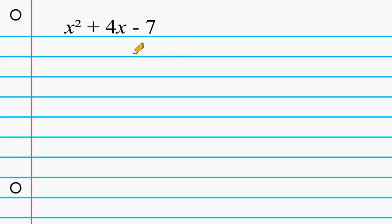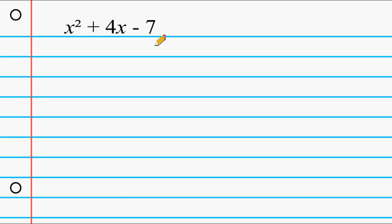Normally with quadratic equations, I like to first see if I can solve by factoring, but I can see right away that this equation cannot be solved by factoring. Because our last term, which is 7, has the factors of 1 and 7, and you cannot combine those factors in any way to make the middle term. That is an indication you cannot use factoring, so you have to use a different method, such as the quadratic formula or completing the square.